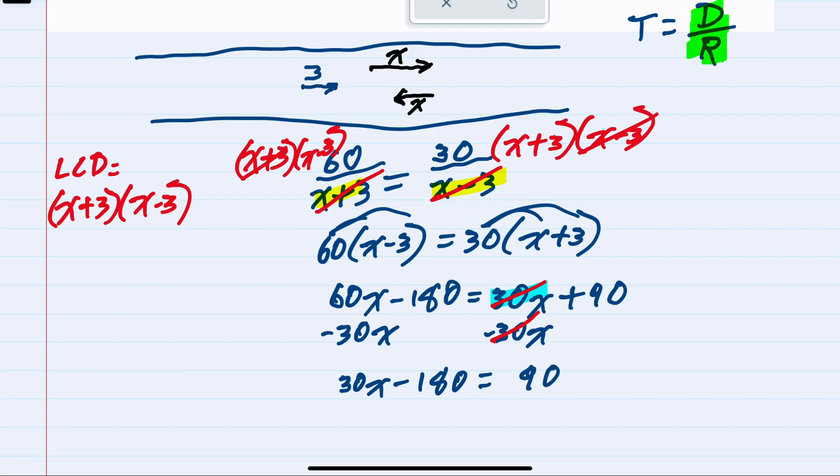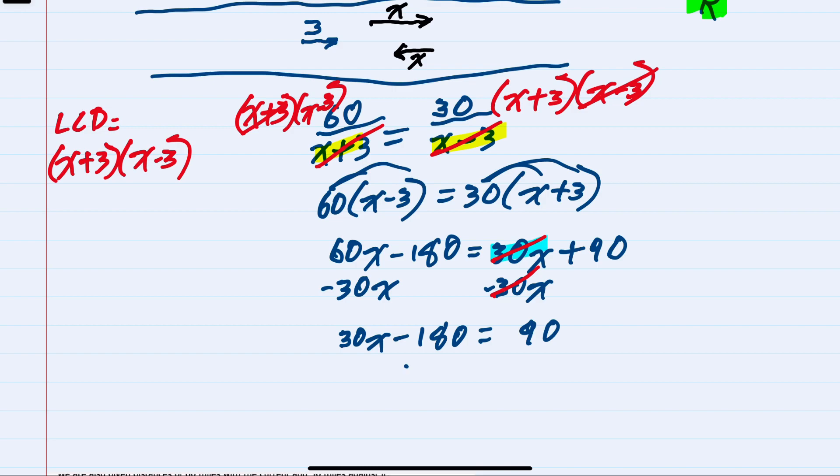Isolating the X, I can add the 180 over to the right, so 30X equals 270. Dividing by 30, we have X equals 9.